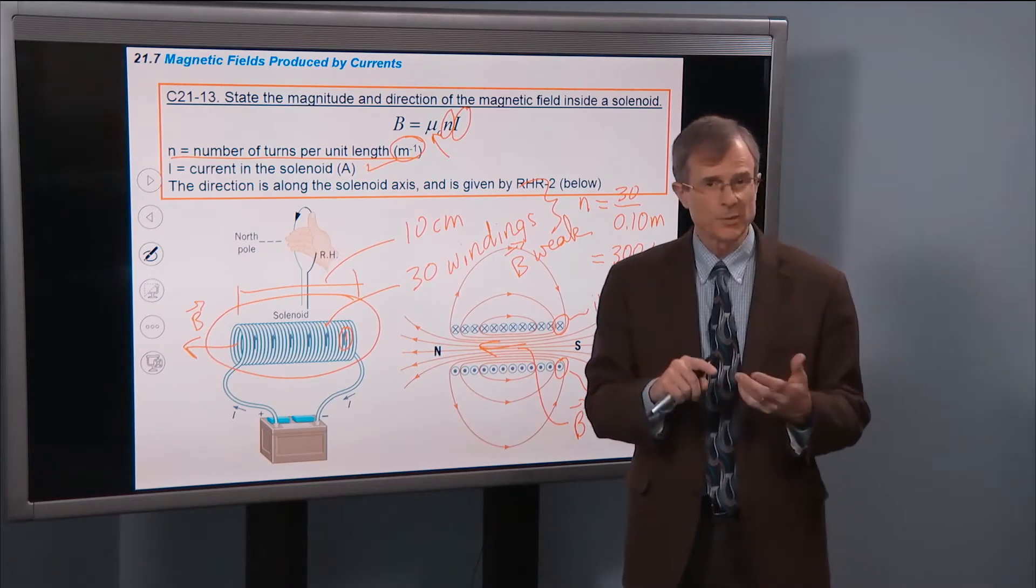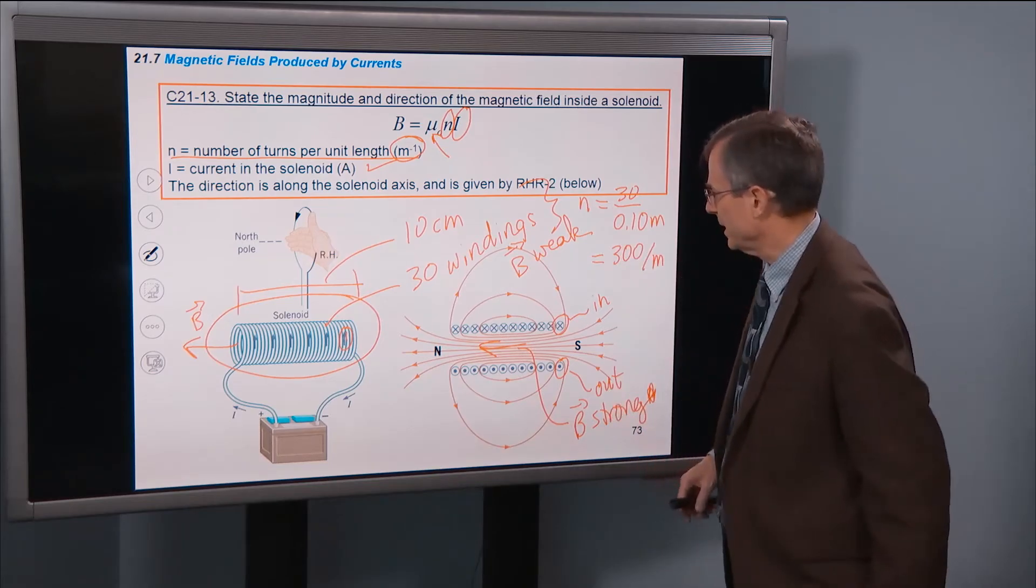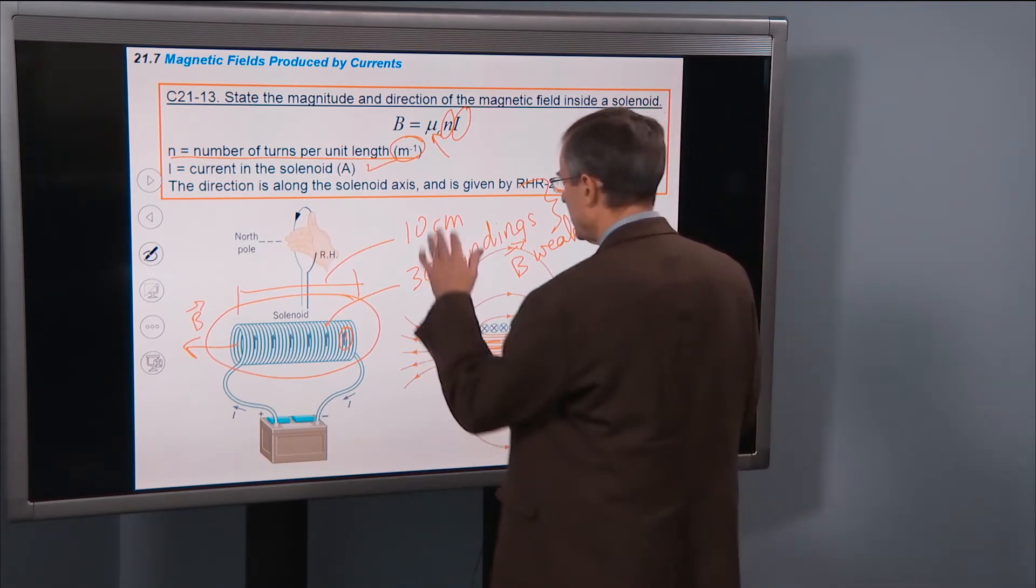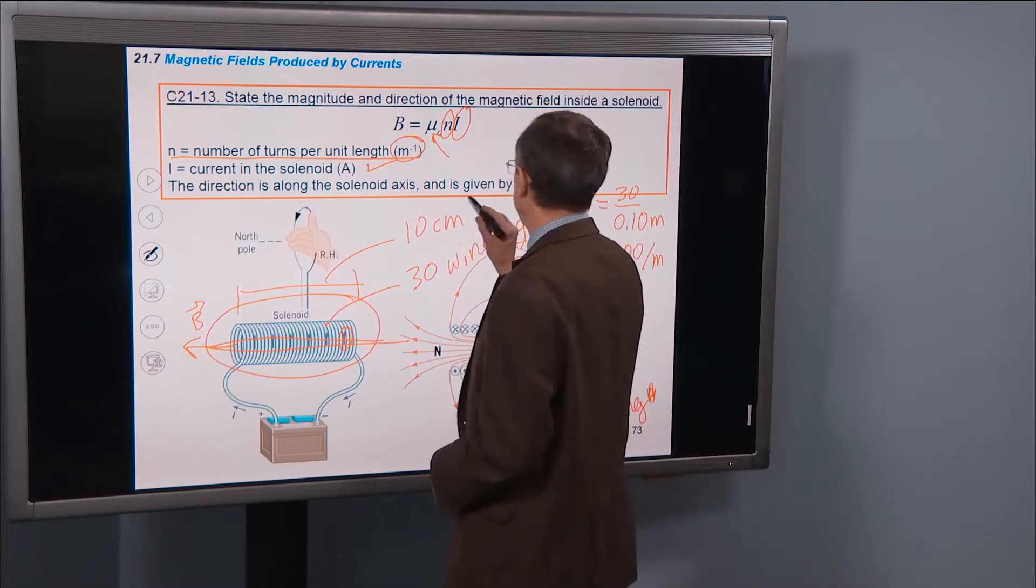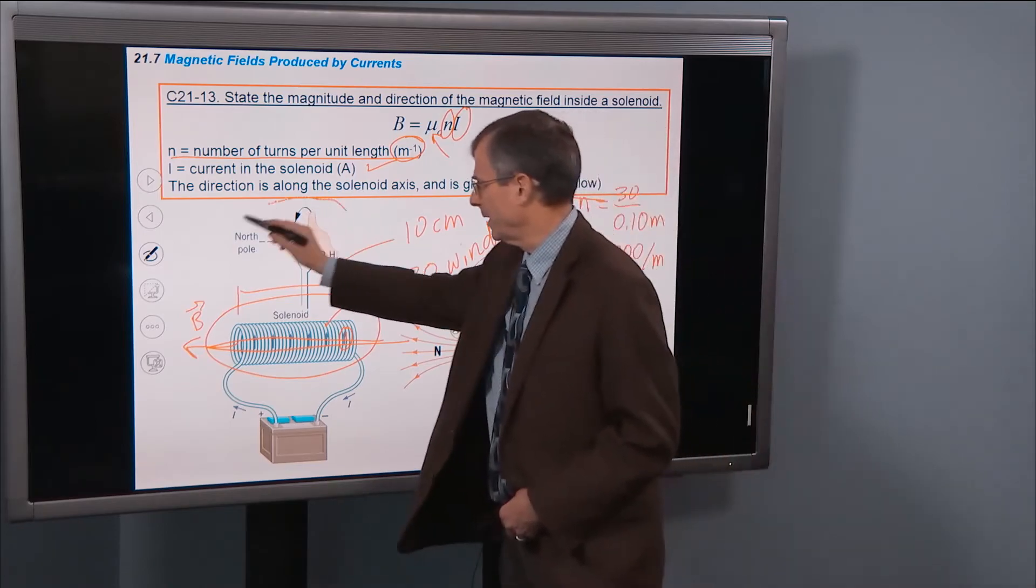And the direction is along the solenoid axis. So what I mean by the axis is this way or that way, and is given by right-hand rule number two, like we talked about right here.